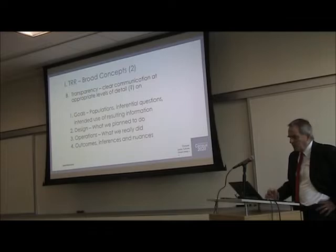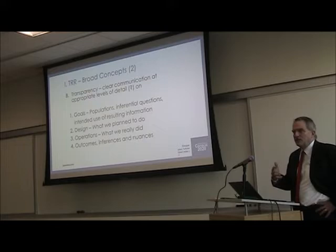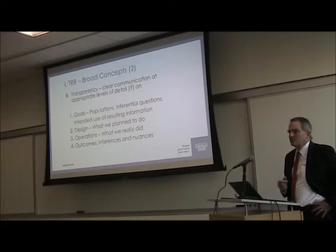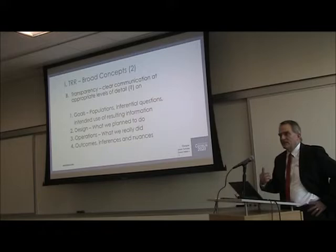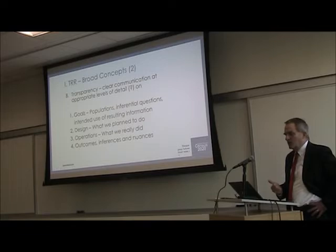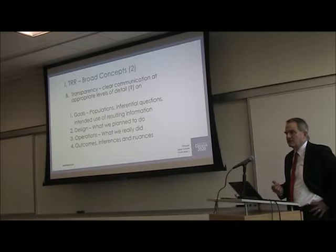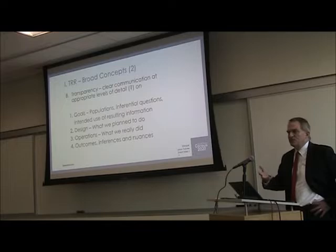I'll start with transparency — the basic idea of 'putting all of our cards on the table,' or more precisely, having clear communication at appropriate levels of detail. The really crucial question is: what do we mean by appropriate levels of detail that will truly resonate with our audiences and data users? This means helping people understand our goals: what population are we talking about, what inferential questions are we asking, what's the intended use, and what level of quality do we need?